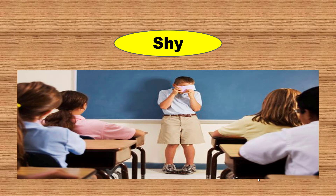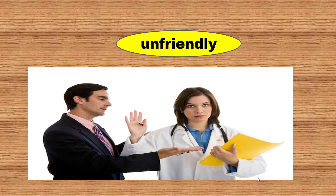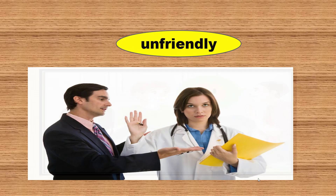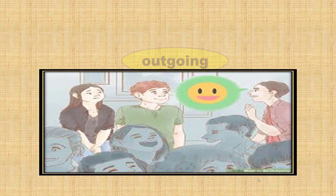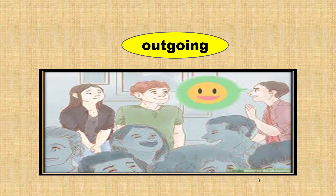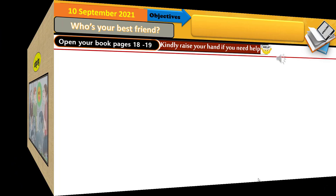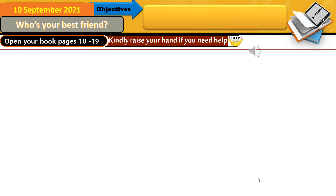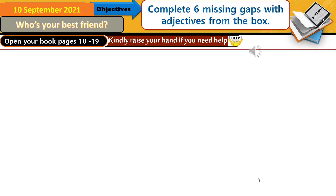Shy. Unfriendly — it's the opposite of friendly. Outgoing means sociable. Now open your Students' Book, pages 18 and 19. Complete the six missing gaps with adjectives from the box.